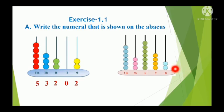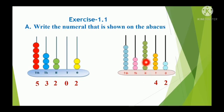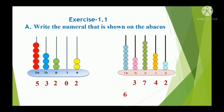In the 1s place, there are 2 beads, so we write 2. In the 10s place, there are 4 beads, so we write 4. In the 100s place, there are 7 beads, so we write 7. In the 1,000s place, there are 3 beads, so we write 3. In the 10,000s place, there are 6 beads, so it is 6. This number is 63,742.